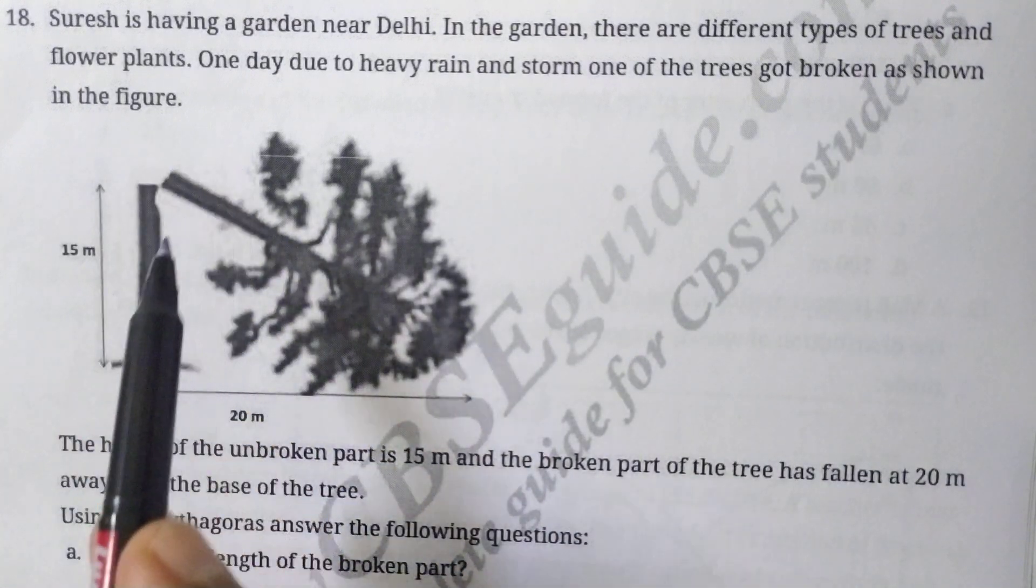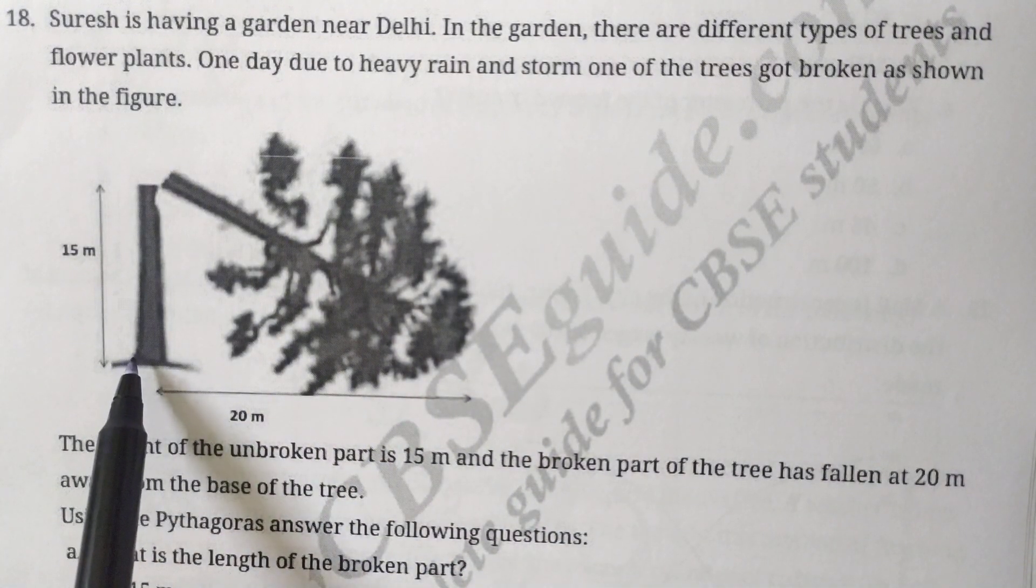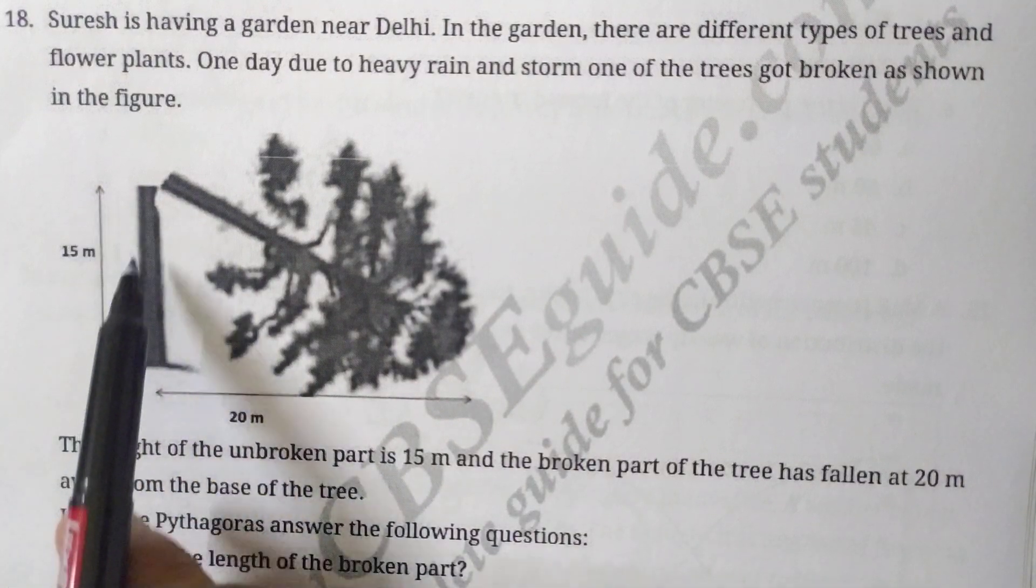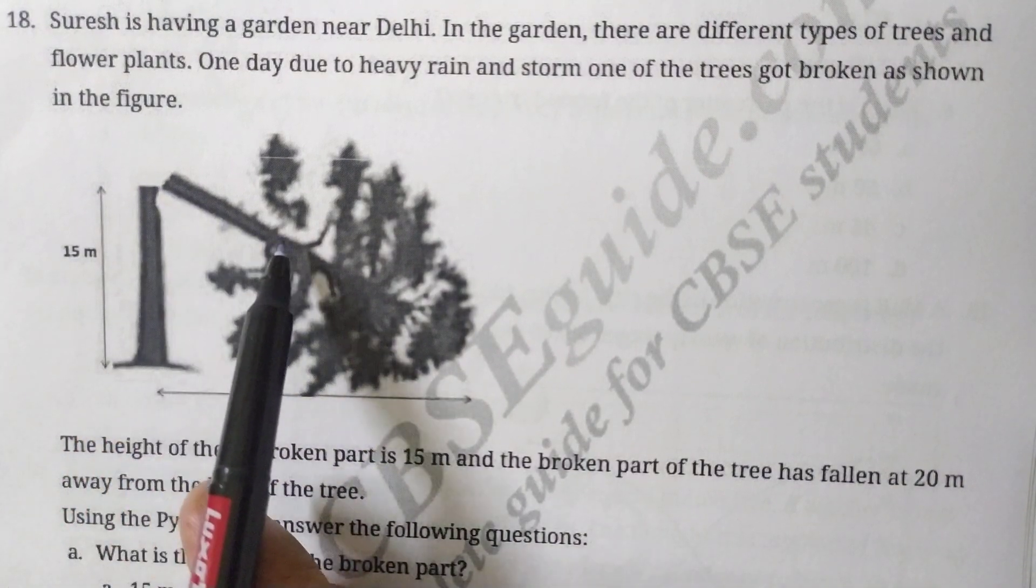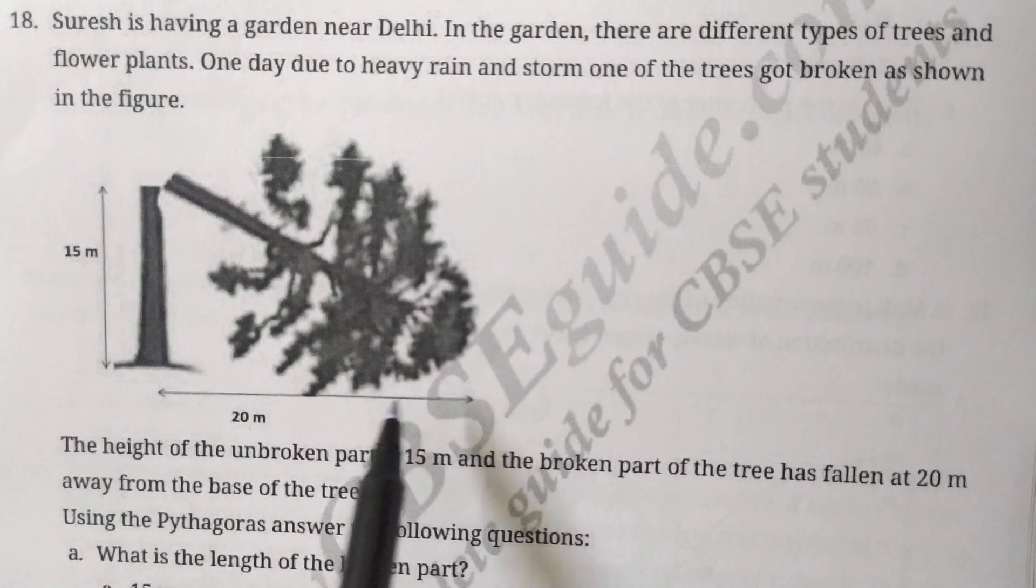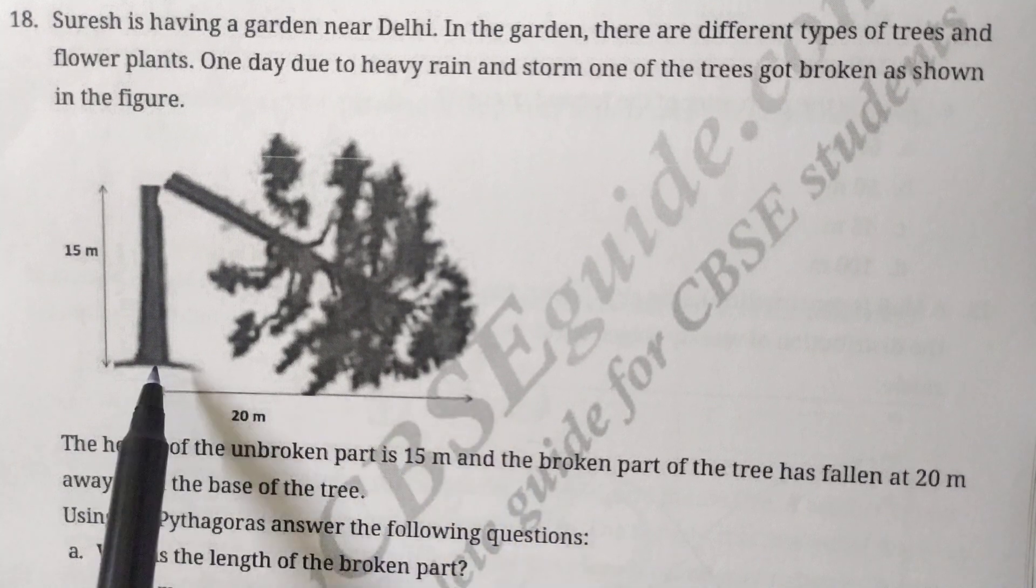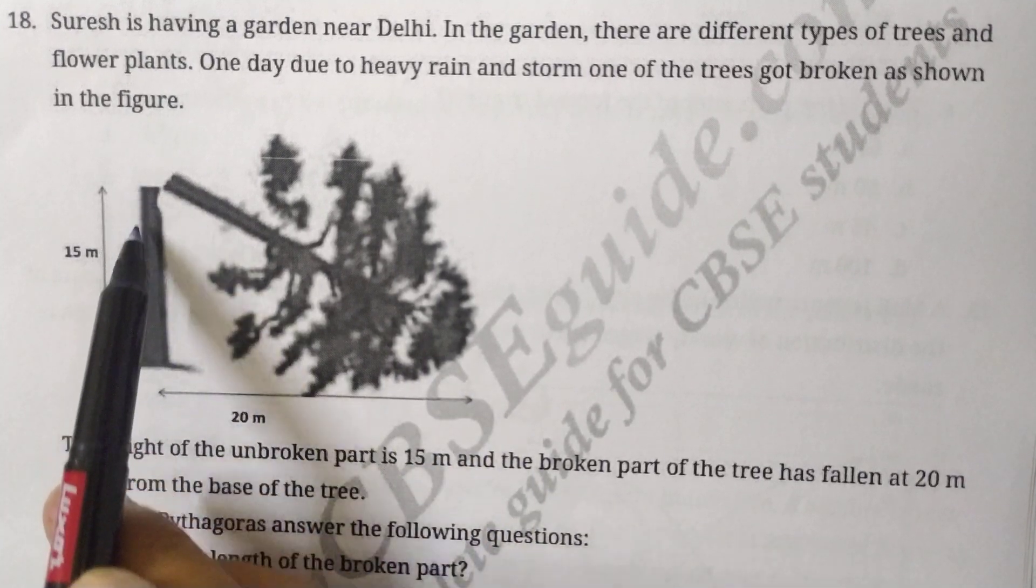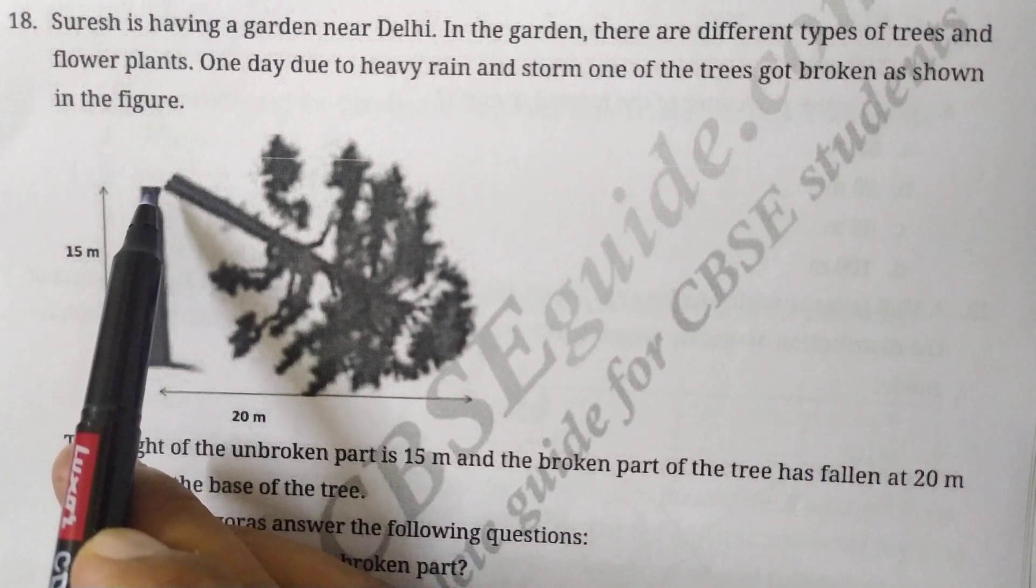See here, this tree is broken at a height of 15 meters and the broken part bent towards the side such that its top reaches a point which is 20 meters away from the foot of the tree. This is 20 meter distance and this is 15 meters from where the tree is broken.